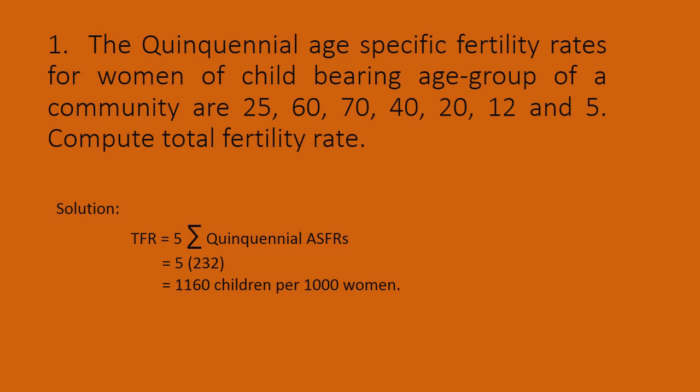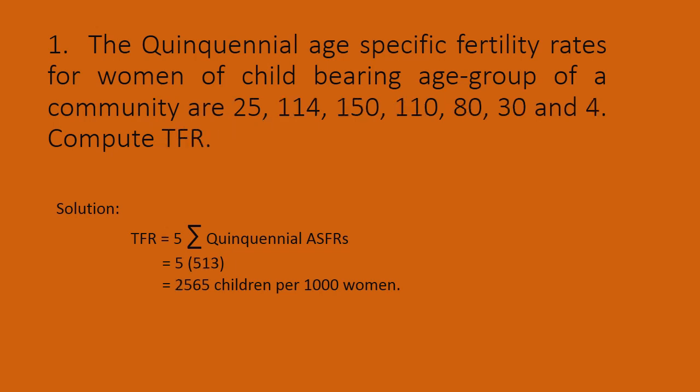Let us consider the next question. The quinquennial age-specific fertility rates for women of child-bearing age group of a community are 25, 114, 150, 110, 80, 34. Compute the TFR. Here the quinquennial age-specific fertility rates are given.